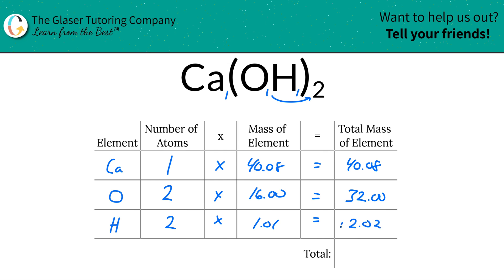And this is going to be 2.02, the total mass of hydrogen there. To find now the mass in the entire compound, all you got to do is just add this column together. Now take all the total mass atom together. So this works out to be about 74.10.